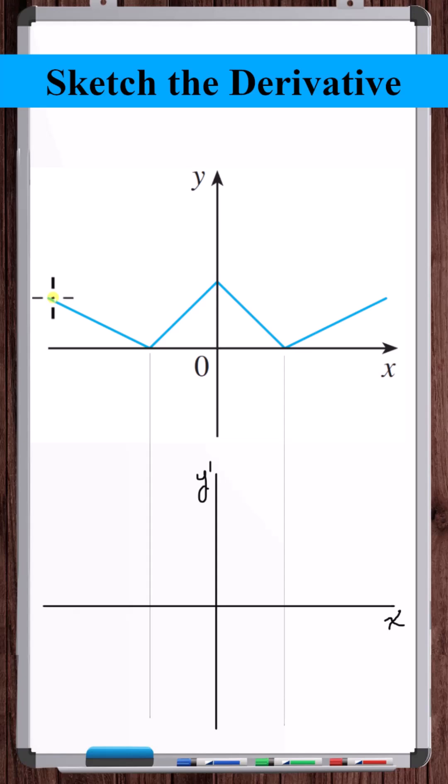Furthermore, it looks like the magnitude of the slope of this line and this line are the same. This one is just negative and this one's positive. Same here. And it looks like the magnitude of this slope is bigger than this slope.